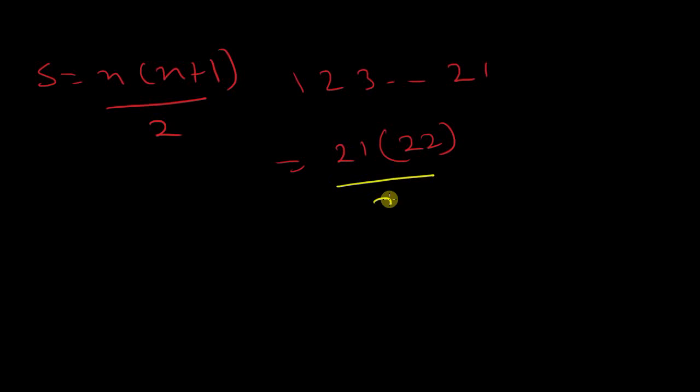When you multiply 21 times 22, you get 462. Divide by 2, and you get 231. So our sum S equals 231.